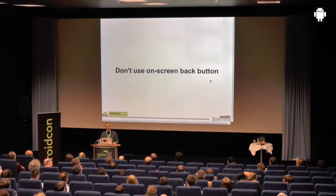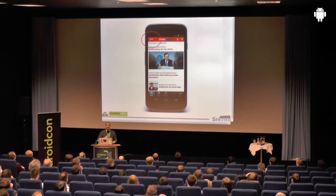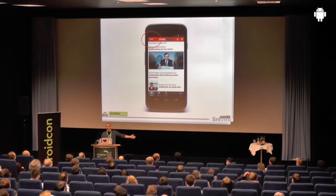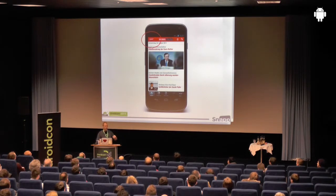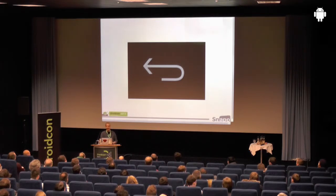On-screen back buttons — when you see an on-screen back button in an application, you know the developer and designer didn't know what they were doing. Take Spiegel Online in Germany — this application is worth downloading because they made every single mistake you can possibly make. If they'd generated a random UI it would have been better. They have back buttons and tabs and whatever. Android phones have back buttons — use that. Even though it has issues, it's still better than mixing multiple navigation patterns.